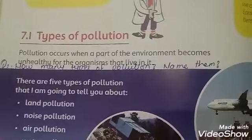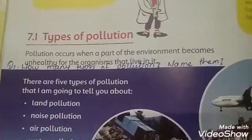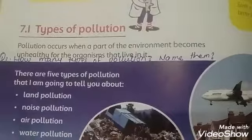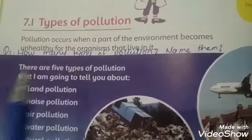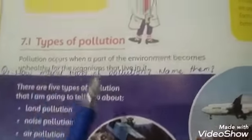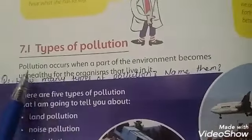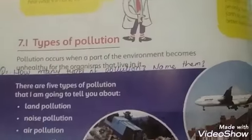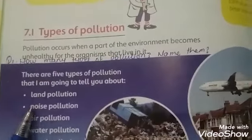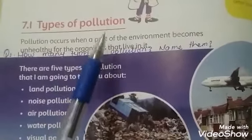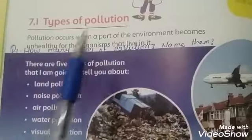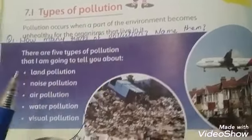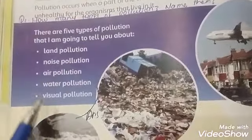Unit 7 is about the environment. On page number 60, students first need to learn what pollution is. Pollution is anything that is unhealthy for the organisms that live on the earth. Pollution occurs when a part of the environment becomes unhealthy and it is not suitable for organisms to live in.